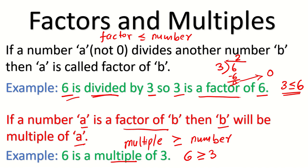If I say 10 is a multiple of 20, then this is wrong. Why? Because 10 is not bigger than 20. So always remember: multiple should be bigger or equal, and factor should be smaller or equal.